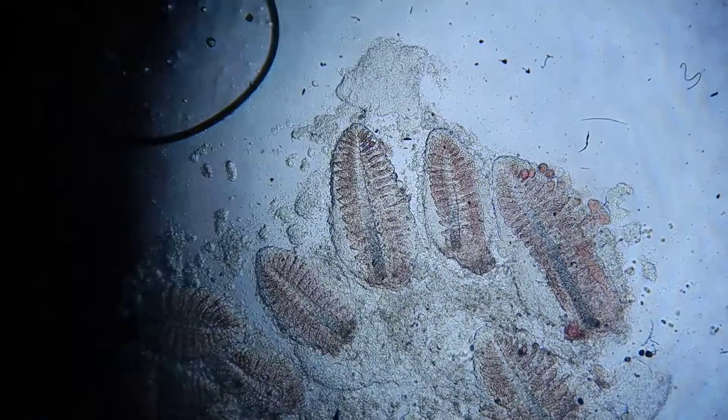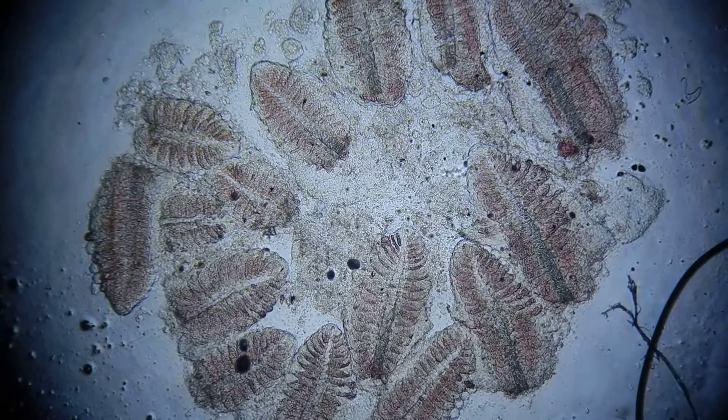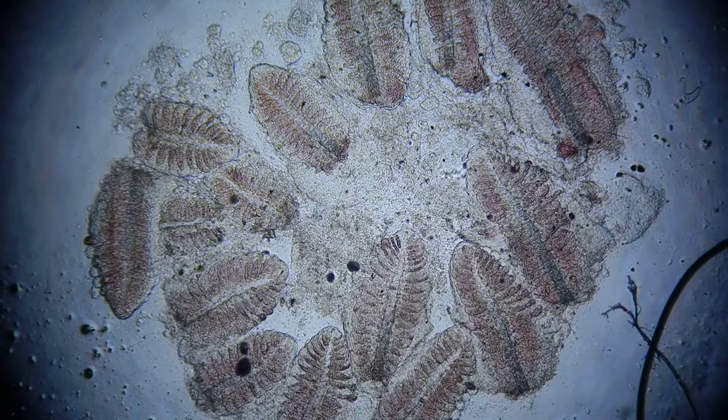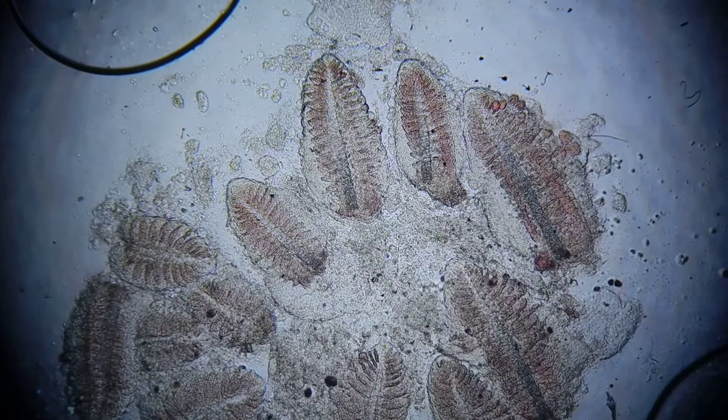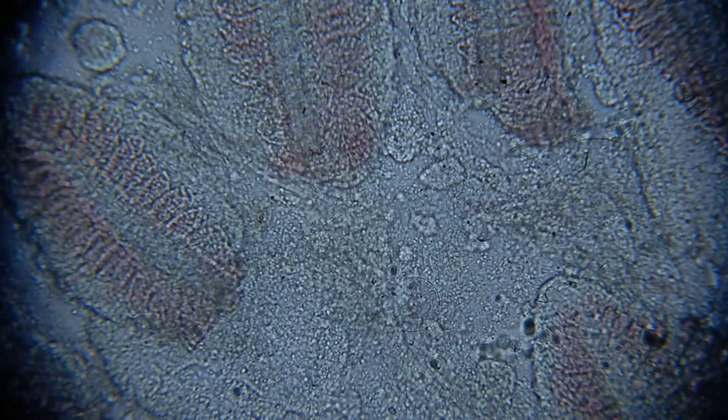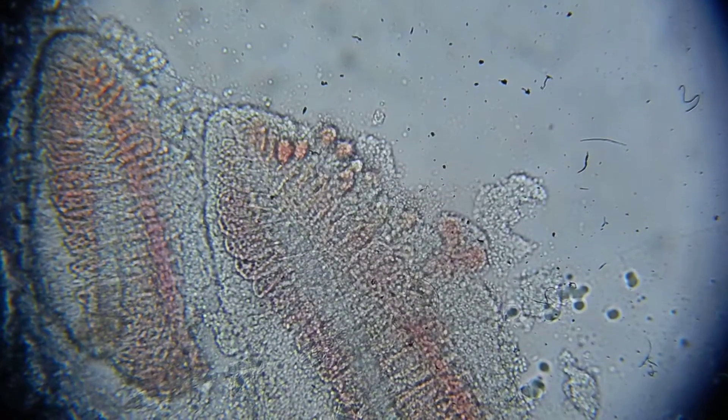And also when you are assessing gill health, look at the redness. Make sure that they are all filled with blood. Anemic goldfish would look quite pale. And also have a look to see if there's anything moving. So if there's anything moving, it's evidence of an external parasite. And it can be any one of a number of things.